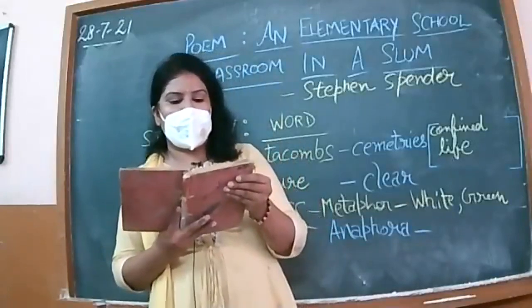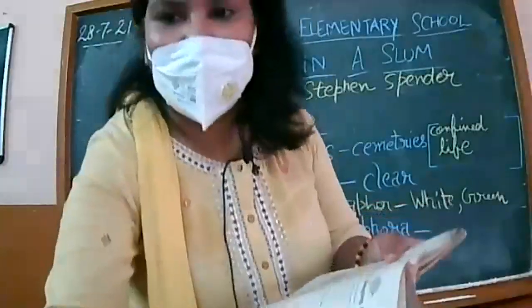Second question: the paper-seeming boy with rat's eyes means — Suhani has given the correct answer: the boy is thin, hungry, and weak. Third: the stunted unlucky year of twisted bones means — Chandan has given the correct answer: the boy has an inherited disability.